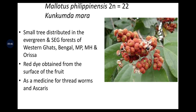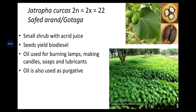Mallotus philippensis (2n = 22), known as kumkuma tree, is the source of red dye obtained from the surface of the fruit. It is a small tree distributed in evergreen and semi-evergreen forests of Western Ghats, West Bengal, Madhya Pradesh, Maharashtra and Odisha. Also used as medicine to treat worms and ascaris. Jatropha curcas (2n = 2x = 22), also called ratanjot or gottaga, is a small shrub with acrid juice. Seeds yield biodiesel; oil is used for burning lamps, making candles, soaps and lubricants, and also used as a purgative.